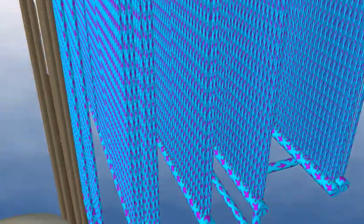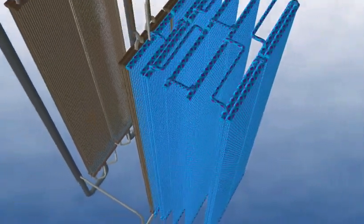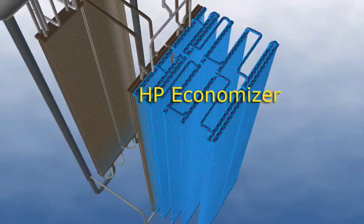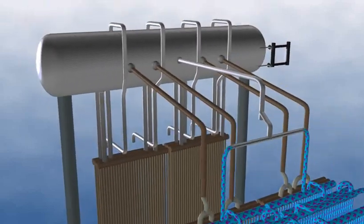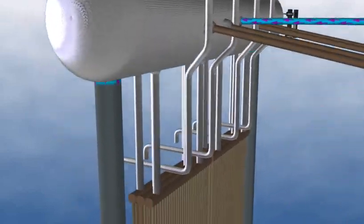As in the LP and IP systems, feed water from the boiler feed pump flows through the HP economizer to a distribution header in the HP drum.